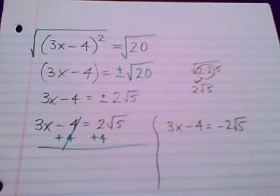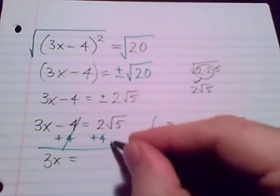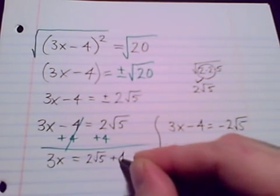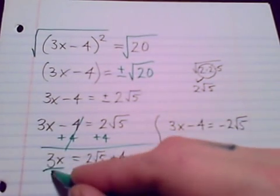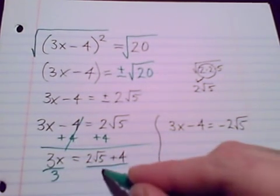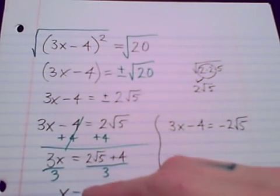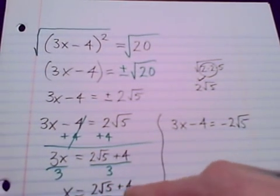Cancel. We have 3x equals, not like terms, 2 radical 5 plus 4. And then divide by 3.